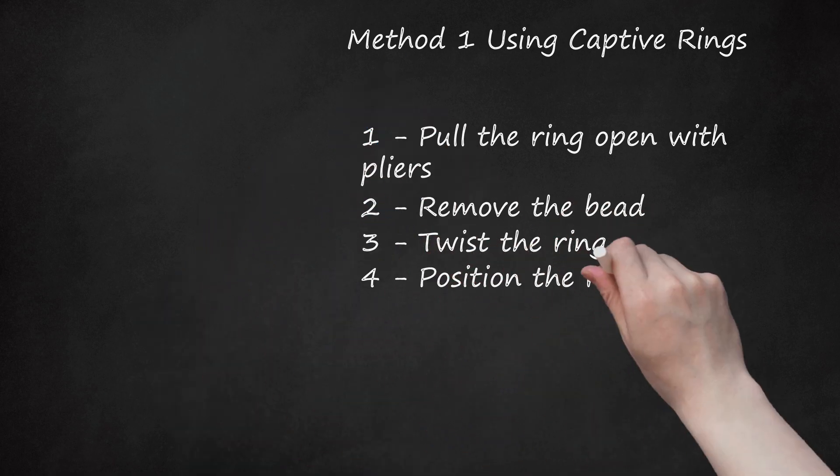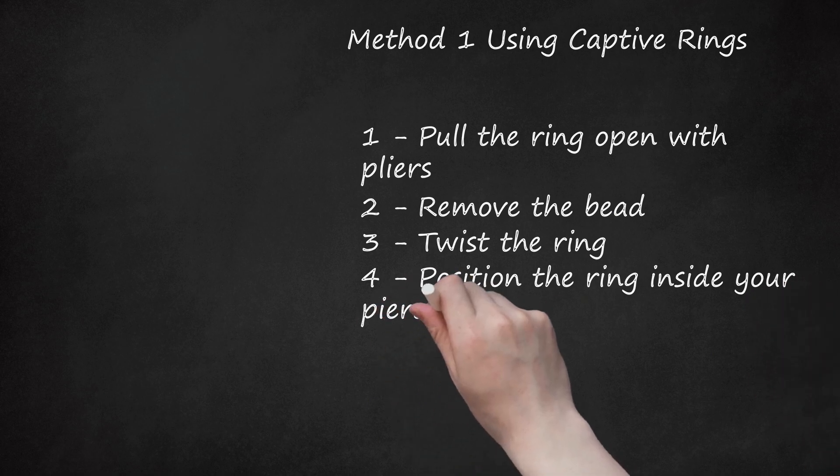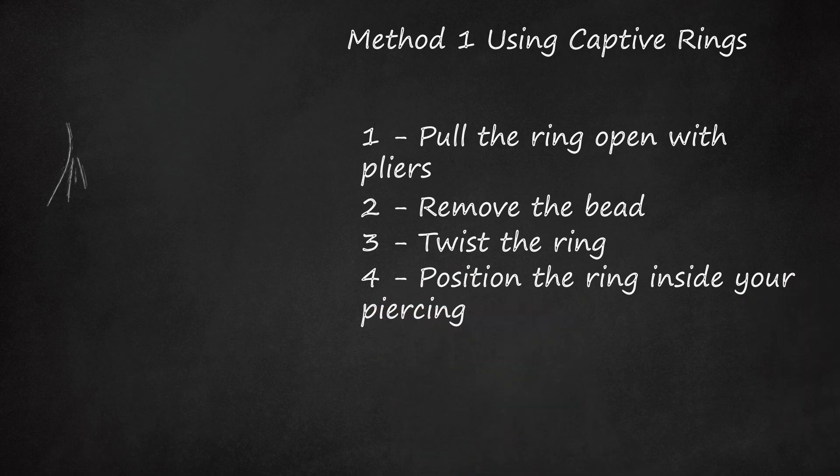Step 4 - Position the ring inside your piercing. Feed one end of the ring into the piercing hole on your nose. Gradually wind the ring further into the hole until the center rests inside the piercing and the opening lies directly below it.